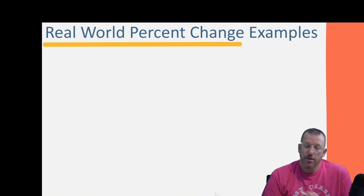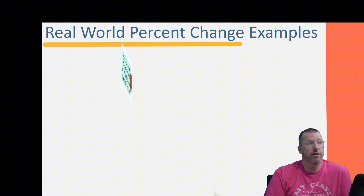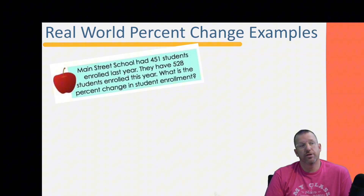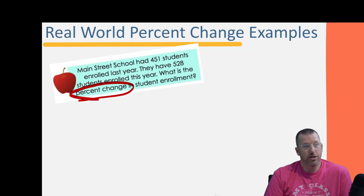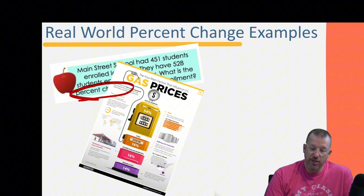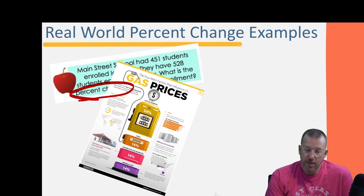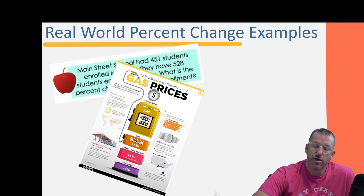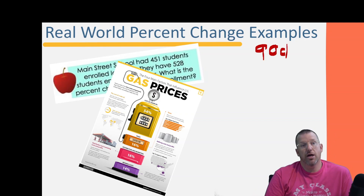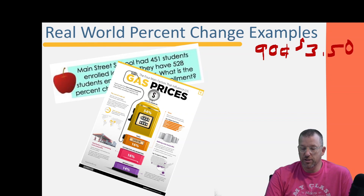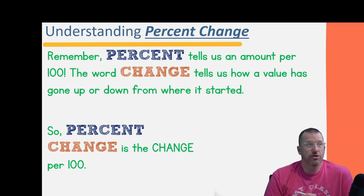Here are some real-world examples. Main Street School had 451 students last year and 528 students enrolled this year — they've increased in size. What percentage did they increase? Another example: gas prices. In 1988 you could buy gas for around 90 cents a gallon, and now it could be three dollars and fifty cents per gallon. What's the percent increase?